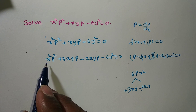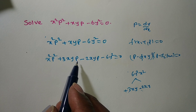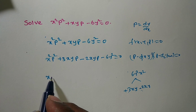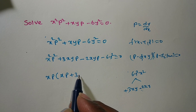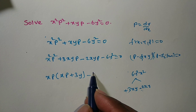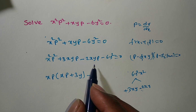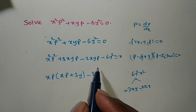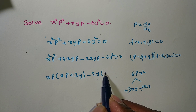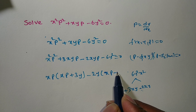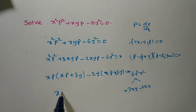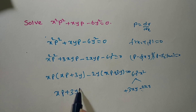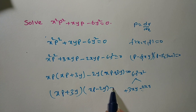From the first two terms, xp is common, leaving p plus 3y. From the last two terms, 2y is common, leaving xp minus 2y. So we factor as: xp plus 3y times xp minus 2y equals zero.